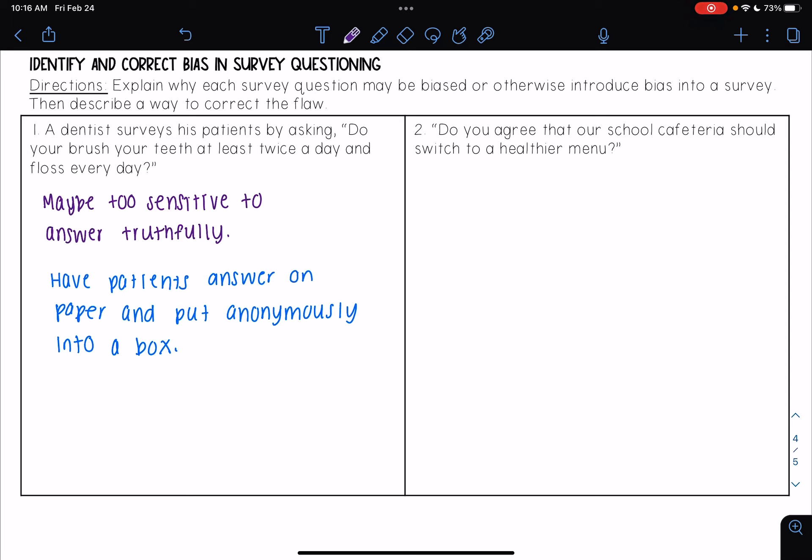This one could introduce bias because it encourages a particular response. That's because it says 'do you agree,' which insinuates that most people are saying the school cafeteria should switch to a healthier menu. So it encourages a particular response.